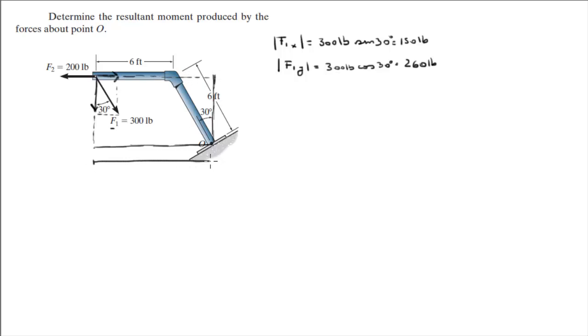So the length of the lever arm is equal to 6 feet, right here, plus 6 feet sine of 30, given by this length and this angle right here, which means that this lever arm is equal to 9 feet.